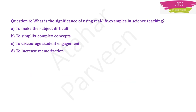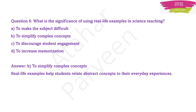Next question: what is the significance of using real-life examples in science teaching? Options are: to make the subject difficult, to simplify complex concepts, to discourage student engagement, or to increase memorization. The correct answer is to simplify complex concepts, because real-life examples help students relate abstract concepts to everyday life experiences. That is why using real-life examples in science teaching simplifies complex concepts in the minds of the learners.